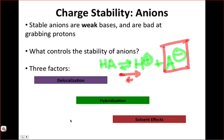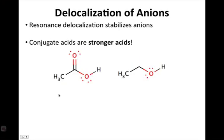What controls the stability of anions? Well, there are three factors involved: delocalization, which is resonance delocalization that we've seen before; hybridization, a concept we've seen before but haven't really dealt with in too much detail; and finally, solvent effects, which is something you may not have seen before, but that can have a profound and interesting effect on the stability of anions. So let's dive right in and attack these three stability factors.